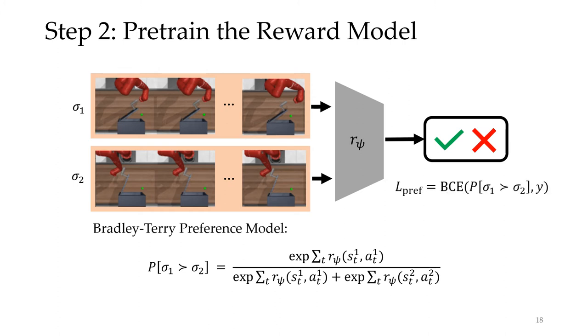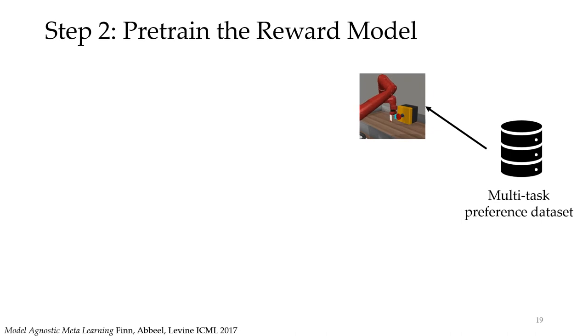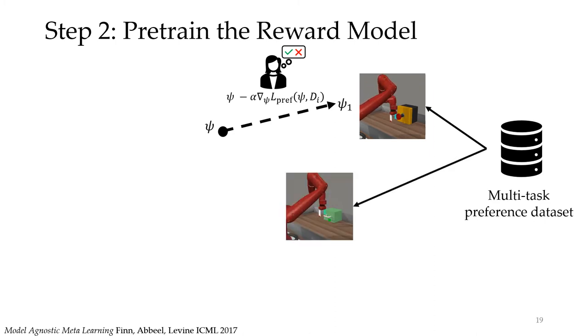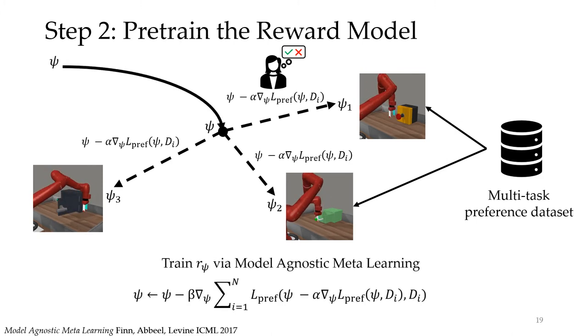While this trains the reward model, it doesn't train it to be adaptive with only a few preferences. Let's take one task from our dataset. Starting from some initial weights, we want our network to learn the optimal weights for this task with only a few preferences. Concretely, we want to perform well on the new task with only a few gradient steps. However, we don't want this to be true for only one task; we want it to be true for all of the tasks in our dataset. We thus explicitly optimize our network to have low preference loss after a few gradient steps on a new task. This directly forms the objective for model-agnostic meta-learning.